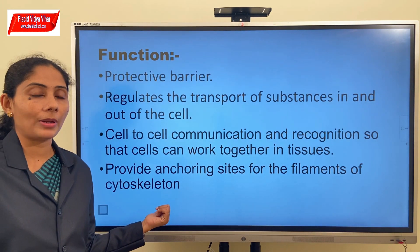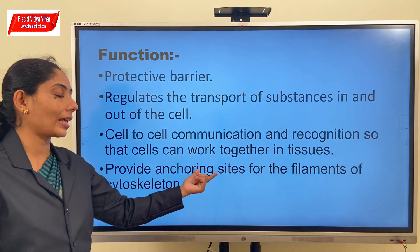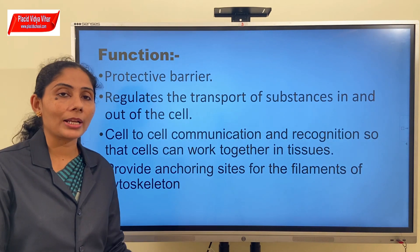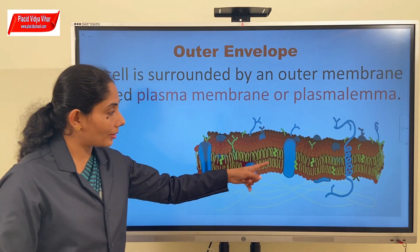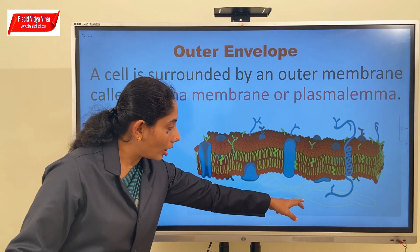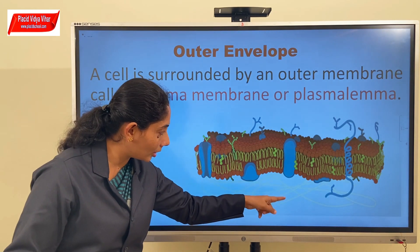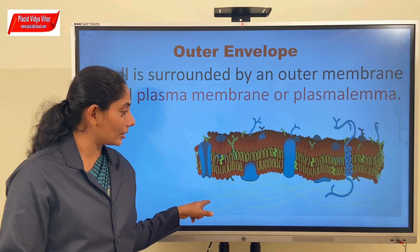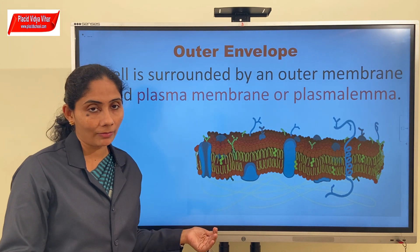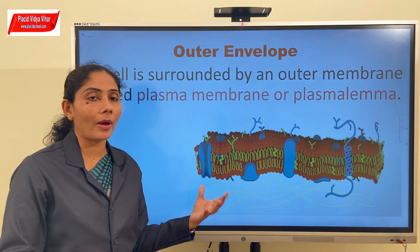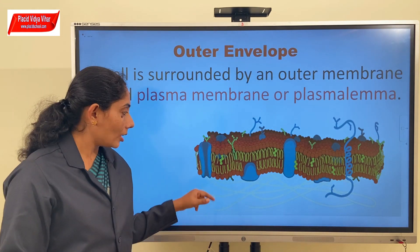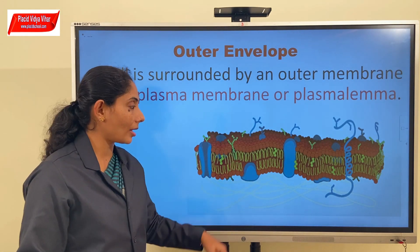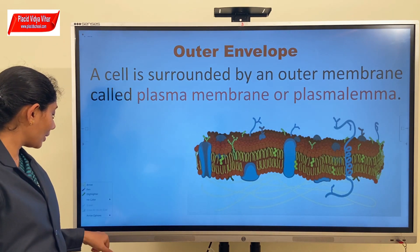Finally, an important function of the plasma membrane is to provide anchoring sites for the filaments of the cytoskeleton. In this picture, you can see some filaments anchored or attached to the plasma membrane - these are referred to as the cytoskeleton. Cytoskeletons are proteinaceous filaments present in the cytoplasm, and one of their important functions is to provide a specific shape to the cell.